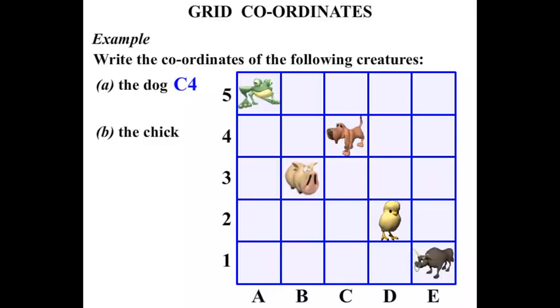What about the chick? Okay, there's the chick there. Which column is it in? Well, it's in the D column, and it's in the row of number 2. So D and 2. We're going to write D2.